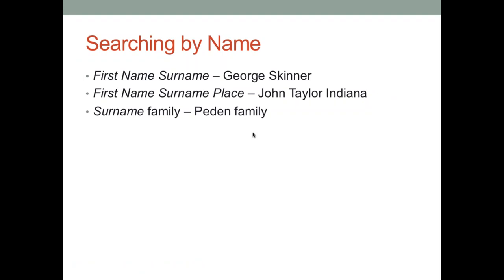As genealogists, our first instinct is to search by name, just like searching for George Skinner. But one thing to think about is playing with different search terms. You could search using first name and surname like George Skinner. If you have a common name or want to focus on a specific location, you could do first name, surname, and place — such as searching for John Taylor, Indiana, or James Ramsey, Pennsylvania — having that name along with the name of the location where you want to find them.